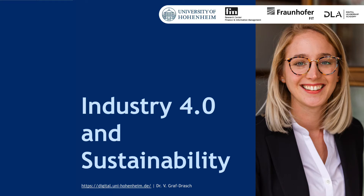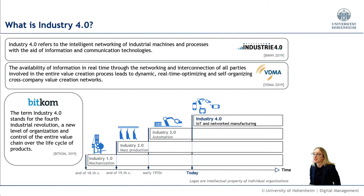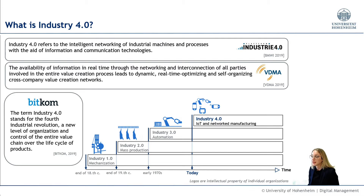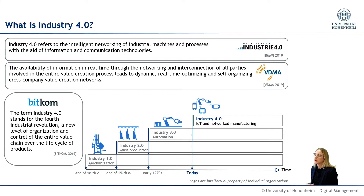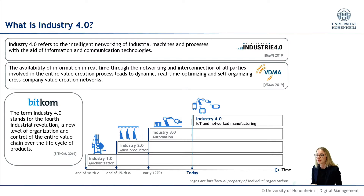Industry 1.0. With Industry 1.0, the first mass production with machines started around 1800. The first machines, such as looms, were operated by human power. Mechanical production facilities were built and machines were driven by water and steam power. During this phase, the first successes of early industrialization included the first railroads, coal mining, heavy industry, steam navigation, and clothes manufacturing.